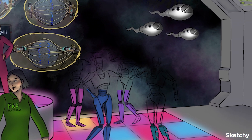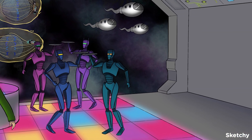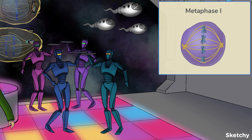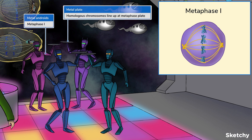Now we've reached metaphase I. In metaphase I, spindle fibers attach to the homologous chromosomes and align them near the center at the metaphase plate. This is represented by the metal androids holding metal plates.